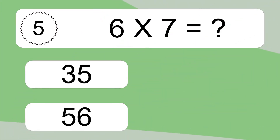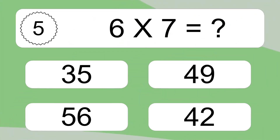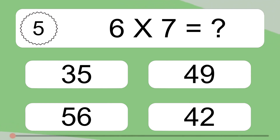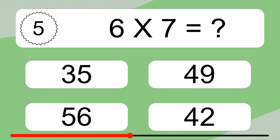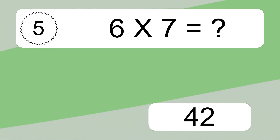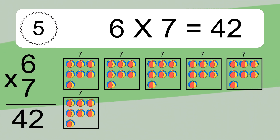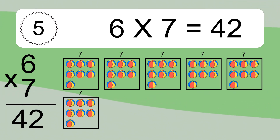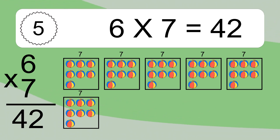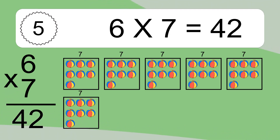6 times 7 equals what? 6 times 7 equals 42. We have 6 boxes, and each box has 7 colorful balls inside. If you count all the balls in all the boxes together, you will have 6 times 7 balls. This equals 42 balls.